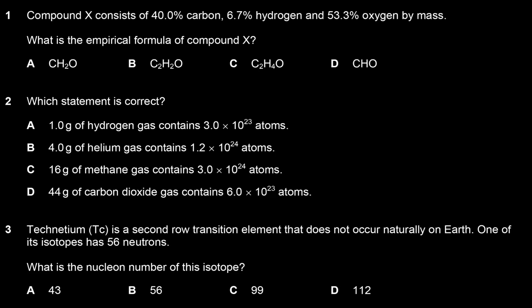Let's say that you had 100 grams. Out of 100 grams, carbon has a mass of 40 grams, hydrogen would have a mass of 6.7 grams, and oxygen would have a mass of 53.3 grams. This is the mass ratio for these three elements in this compound.